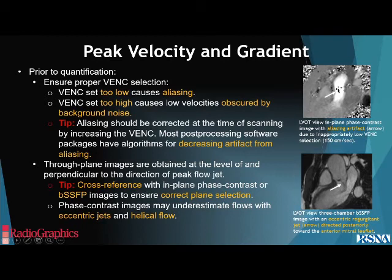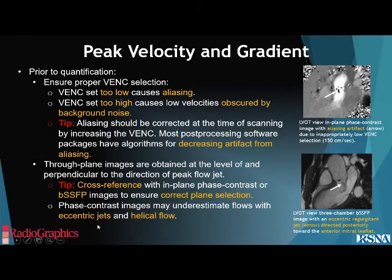A useful tip is to cross-reference with in-plane phase contrast or steady-state free precession images to ensure correct plane selection, similar to using a long-axis view to verify cross-section location. Phase contrast images may underestimate flows with eccentric jets and helical flow due to turbulence, which may not be measured accurately.